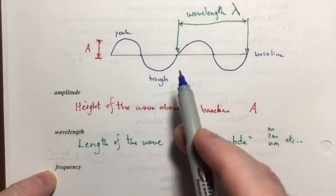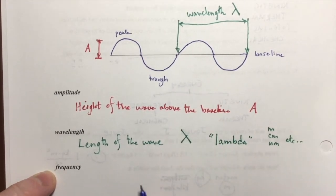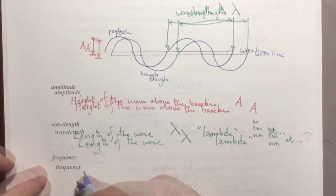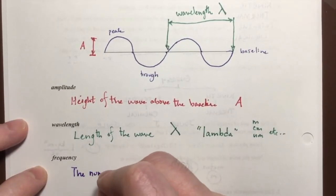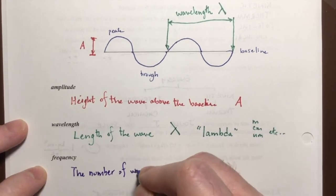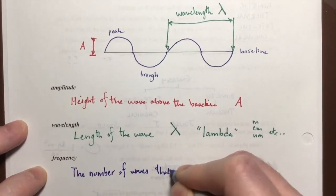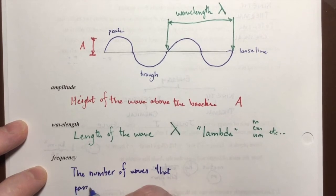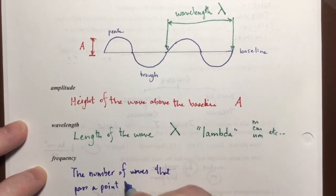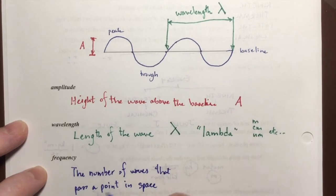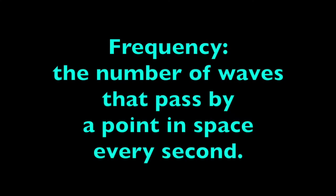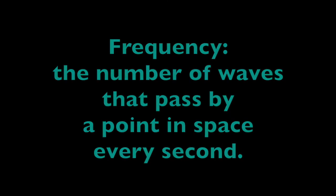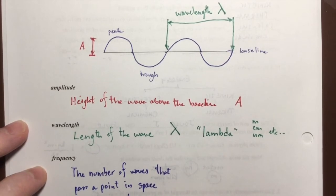Frequency is a little bit more challenging for us to understand. Frequency is the number of waves that pass by a position in space every second.